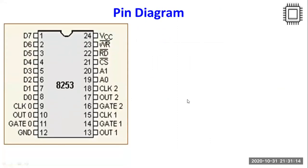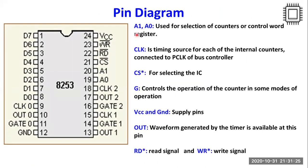Looking into the pin diagram of this IC, 8253 IC is a 24-pin IC where A0 and A1 lines are used for selection of counters or control word register. Clock is an input signal which is generally connected to PCLK signal of your bus controller 8288 IC. Chip select signal is used for selecting the IC. Gate inputs control the operation of the counter in various modes of operation. VCC and ground are the supply pins. Read and write signals are used for reading and writing operations. And out signals are the output lines where various waveforms are generated by the timer and are available on respective pins.